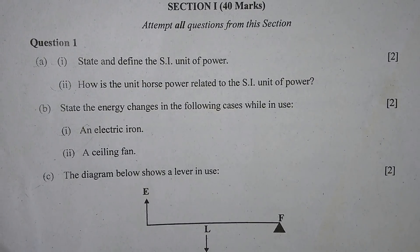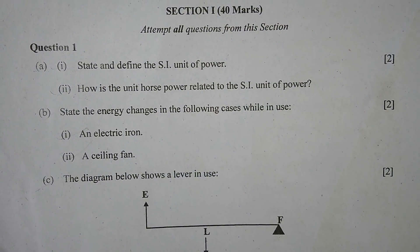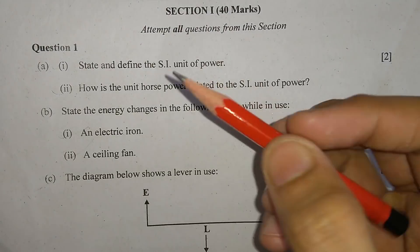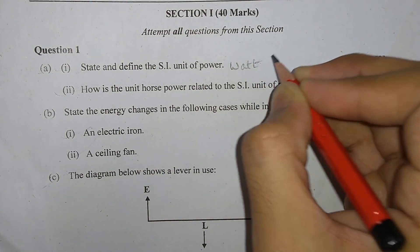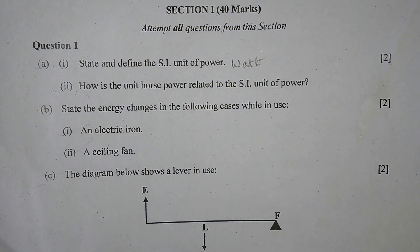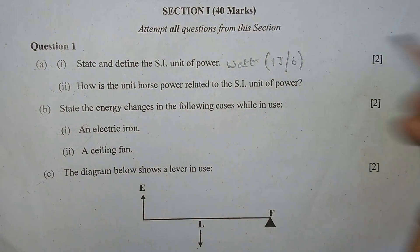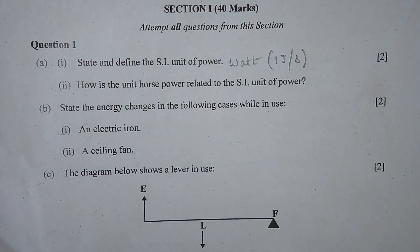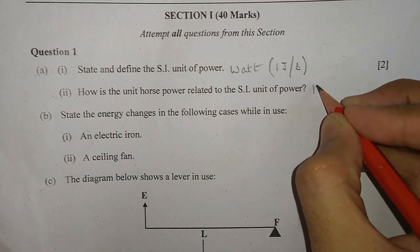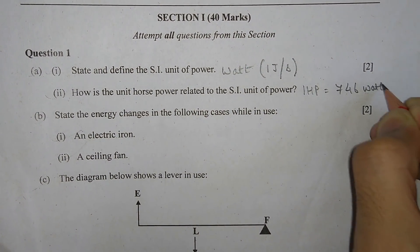We start with Section 1 — 40 marks. You have to attempt all the questions from this section. Question 1, part A: State and define the SI unit of power. The SI unit of power is the Watt. The definition is: 1 Watt is the power when 1 Joule of work is done in 1 second, that means 1 Joule per second. Number 2: How is the unit horsepower related to the SI unit of power? 1 horsepower equals 746 Watt.